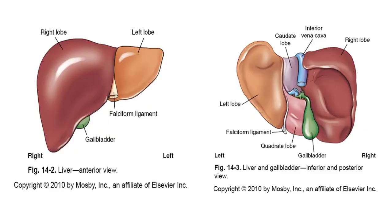The liver is the largest gland in the body. The falciform ligament divides the liver into two major lobes, the right lobe and the left lobe. Two minor lobes are present on the visceral surface: the caudate lobe and the quadrate lobe. The liver is supplied by two blood supplies — the hepatic artery supplies oxygenated blood from the abdominal aorta, and the portal vein carries blood from the digestive system to be filtered by the liver.